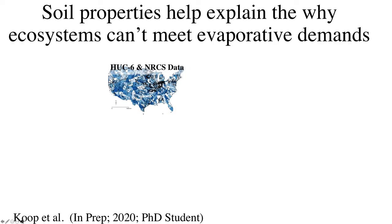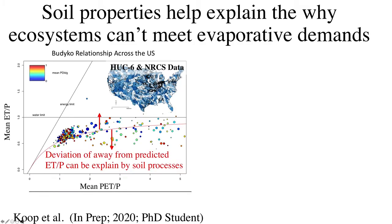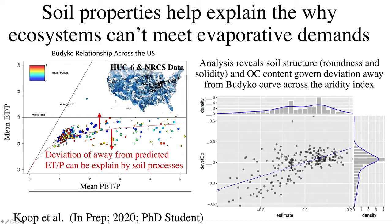This is work by my PhD student Aaron Koop, asking: to what degree do these soils matter to our climate system? Using the same NRCS database conglomerated at HUC-6 levels, he examined how far each watershed falls away from the Budyko curve — how much they are able to meet their evaporative demand. We asked whether that distance from this empirical curve could be explained using information about the soils themselves. What was revealed is that soil structure — roundness and solidity — along with organic carbon content and the aridity index, is able to explain about 50% of the deviation away from the Budyko curve. This hints that soils are playing an important role in governing what's taking place in our climates.